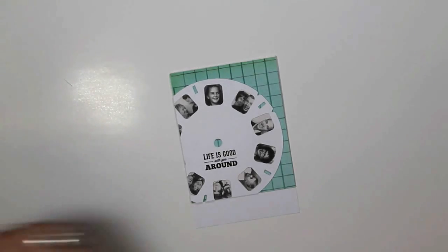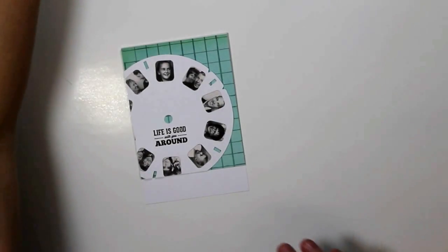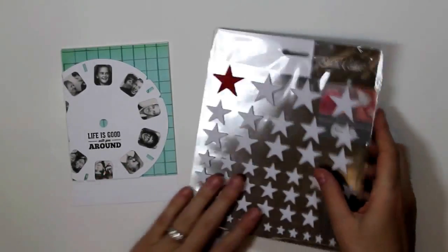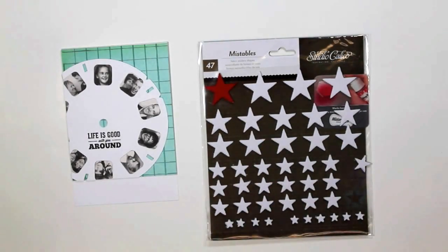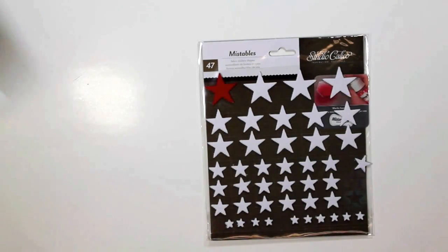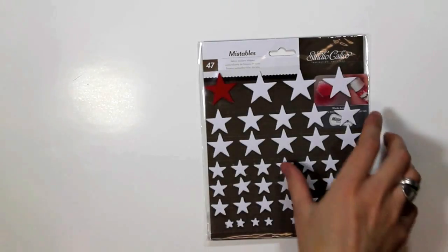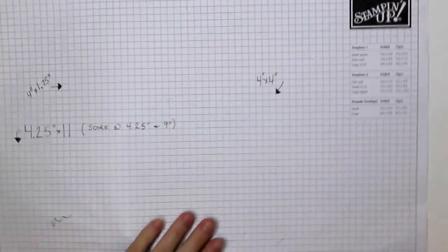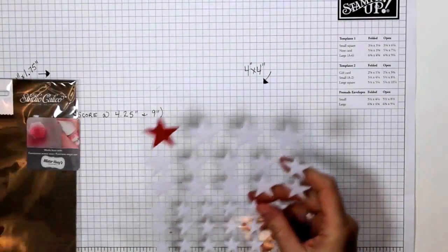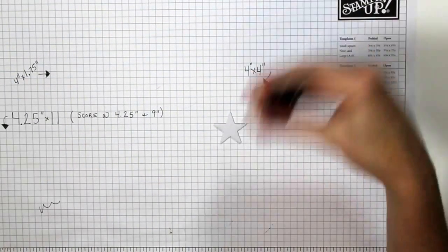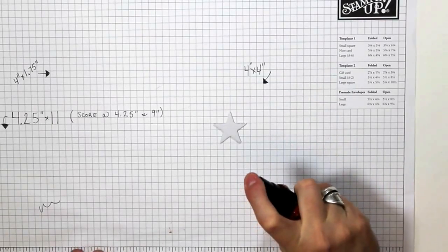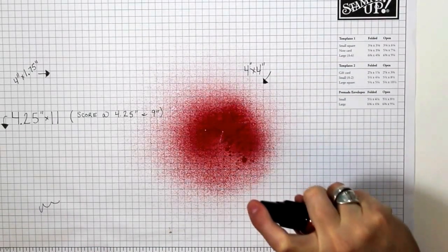The card is coming together, but we need to add some embellishments to add a little bit more visual interest and some pop of color. I'm pulling out some star mistable shapes from Studio Calico. These are basically canvas shapes that can be inked, they can be misted of course. You can even add chalk to add color, or you can just use them as is if you just want a nice white embellishment. But I'm going to go ahead and mist the star for today using some nice bright red spray mist from October Afternoon.